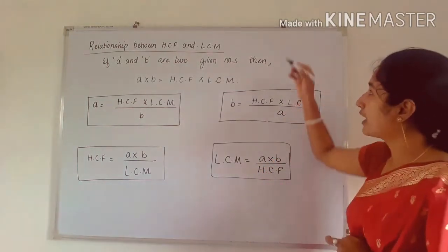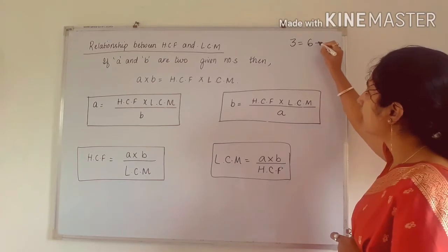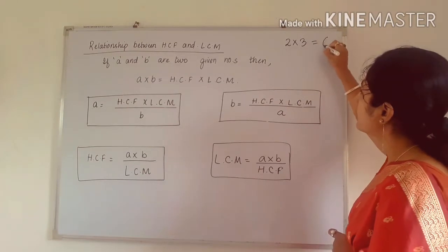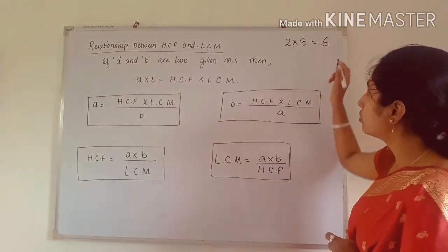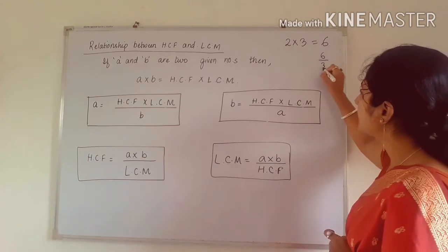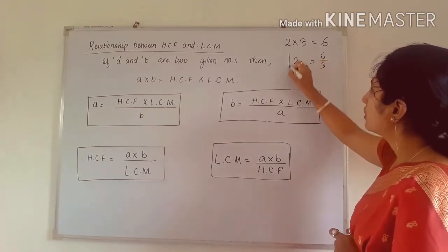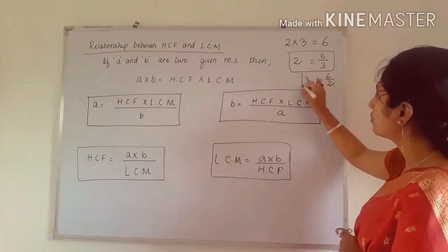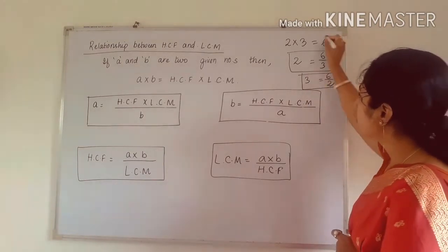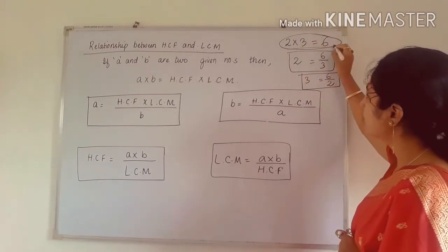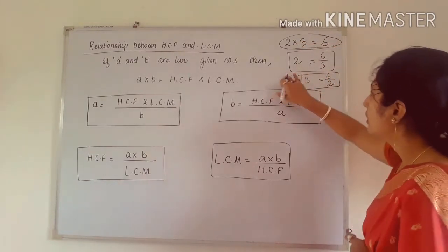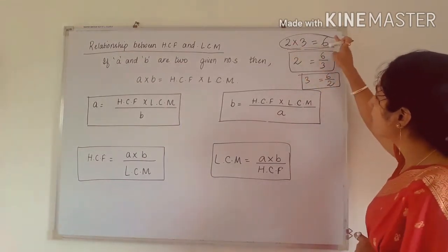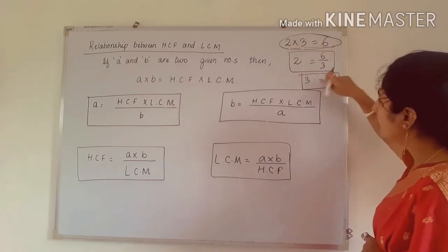See this example: 2 × 3 = 6. From this multiplication, we can write two division facts: 6 ÷ 3 = 2 and 6 ÷ 2 = 3. So when we divide 6 by 3 we get 2, and when we divide 6 by 2 we get 3.